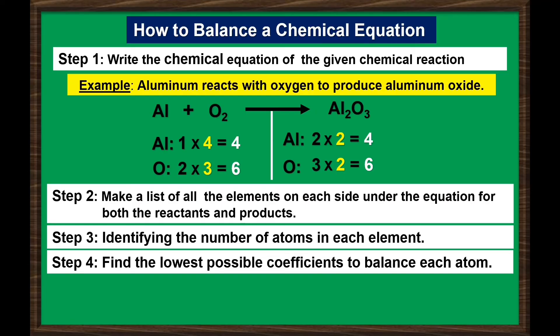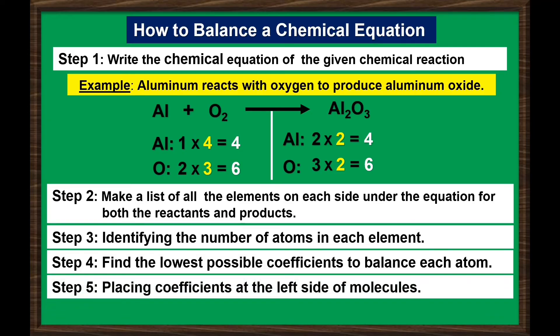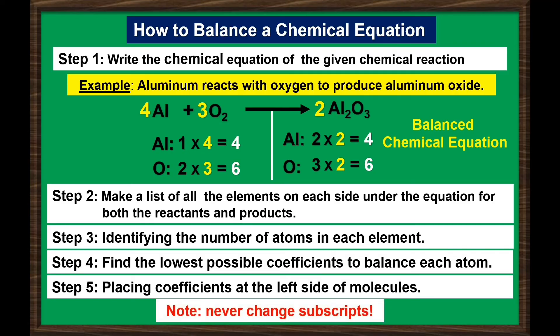For the last step, we can now place the coefficients at the left side of molecules. For the reactants, for aluminum we place 4, and for oxygen, 3. For our product, aluminum oxide, the coefficient is 2. Now the chemical equation is balanced. Always remember that the coefficients are the only numbers that can be changed, and they must be whole numbers. Remember also that the subscripts cannot be changed.